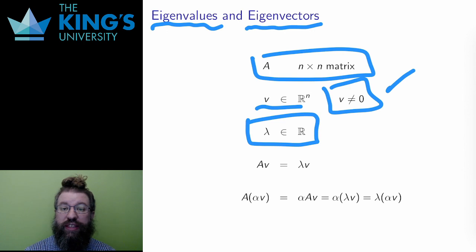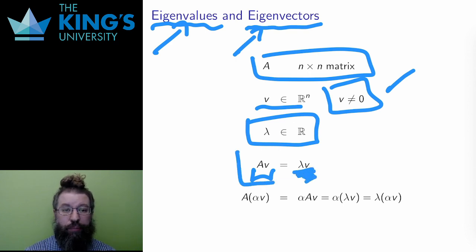The vector V is called an eigenvector of the matrix A with matching eigenvalue lambda, if the matrix action on V, AV, has the result of multiplying the vector V by the number lambda.